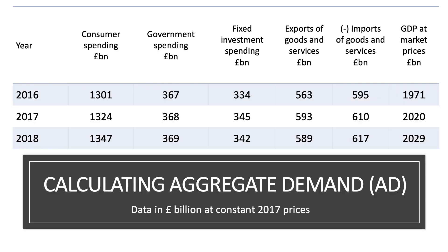So let's take a look at the data for the UK for the years 2016 through to 2018. The figures in the table are expressed in real terms at constant 2017 prices, meaning the data has been inflation-adjusted using the consumer price index for 2017. So this is real economic data. You can see that when you sum together C plus I plus G plus X minus M, you get a figure for GDP at market prices — and we're now a £2 trillion economy.